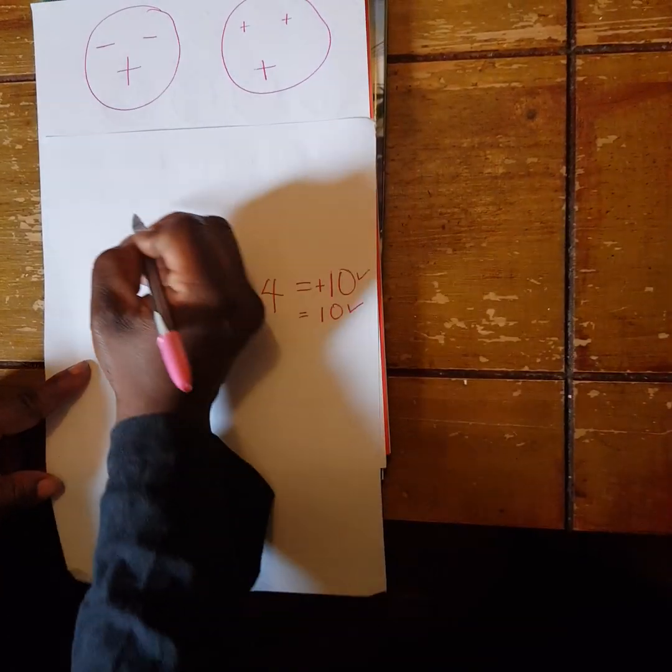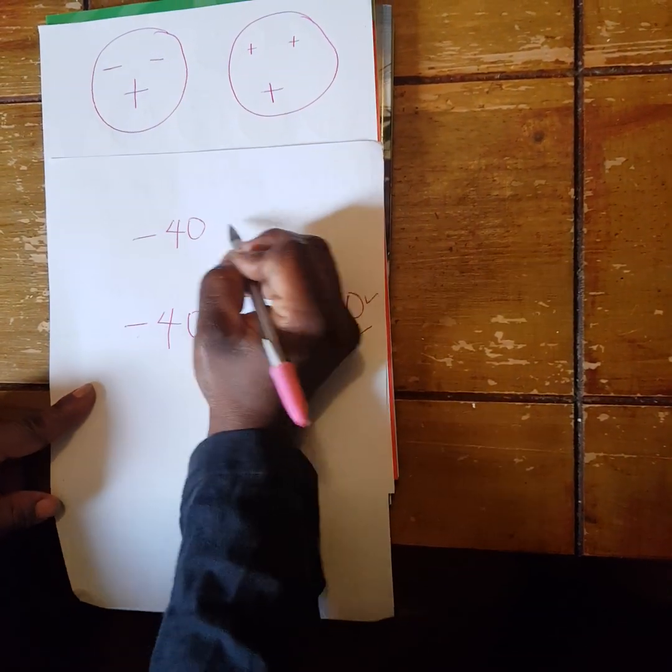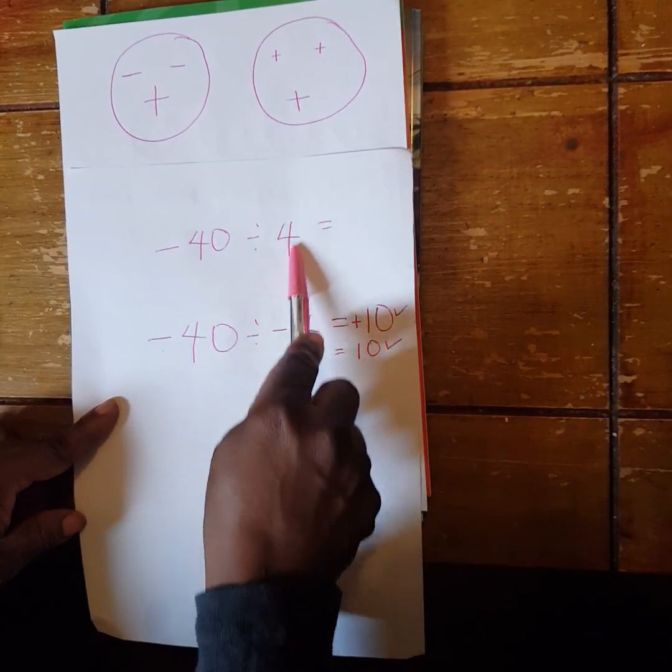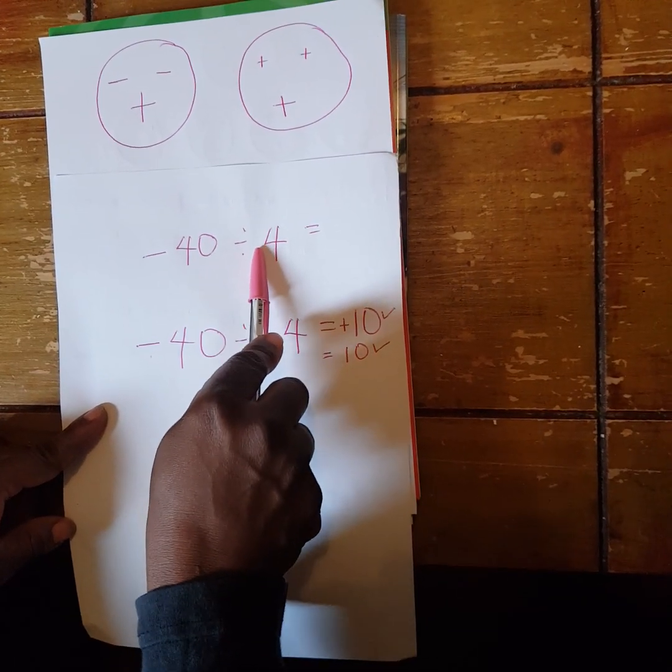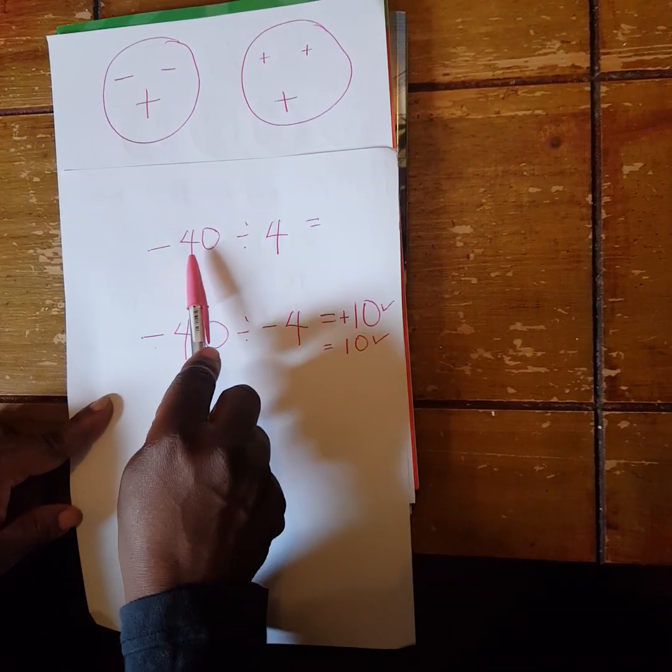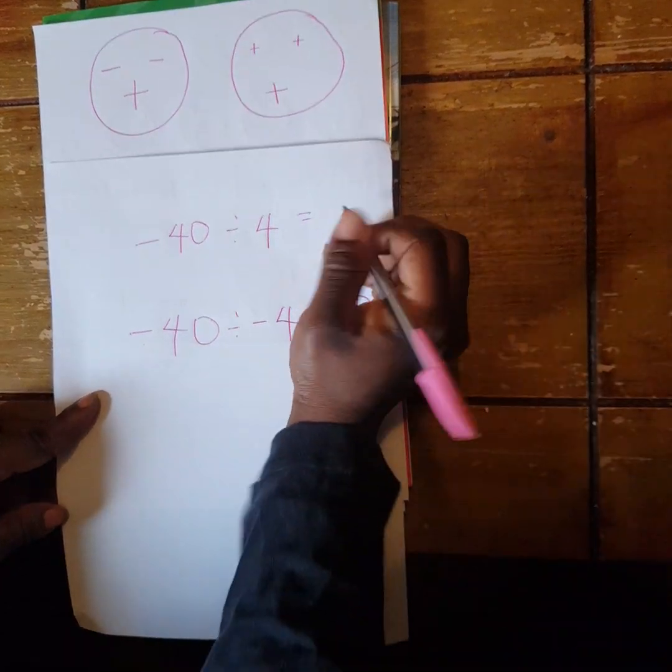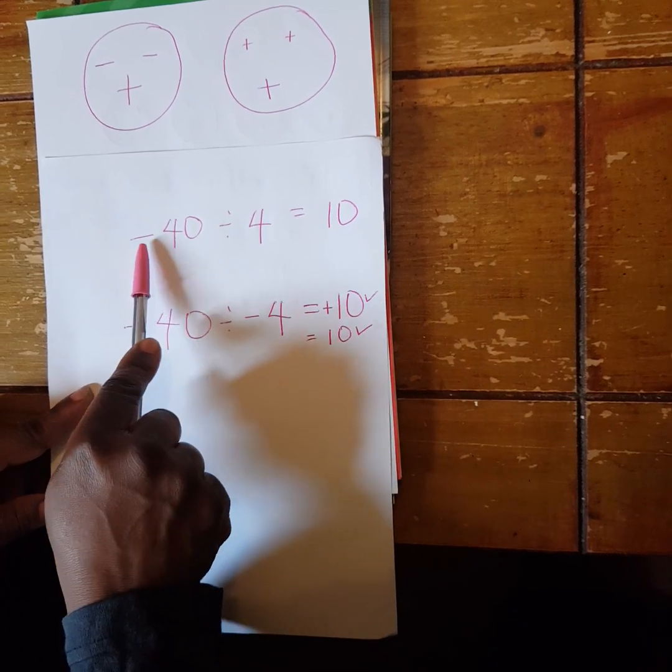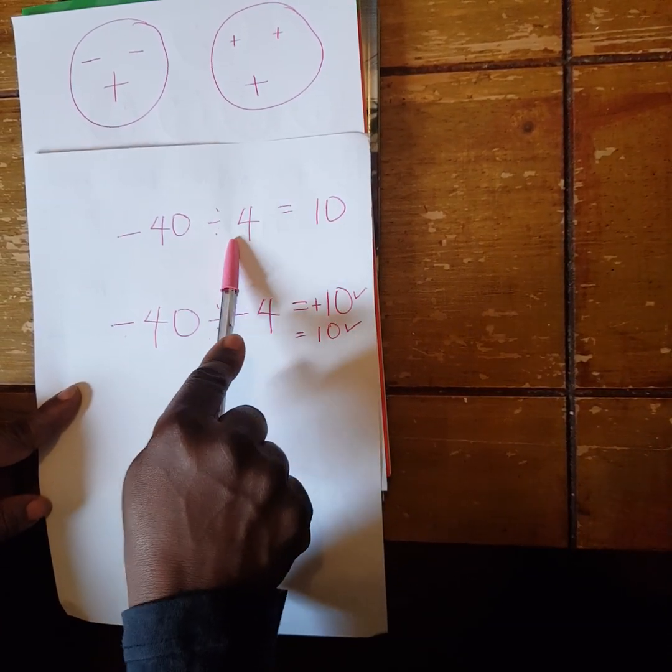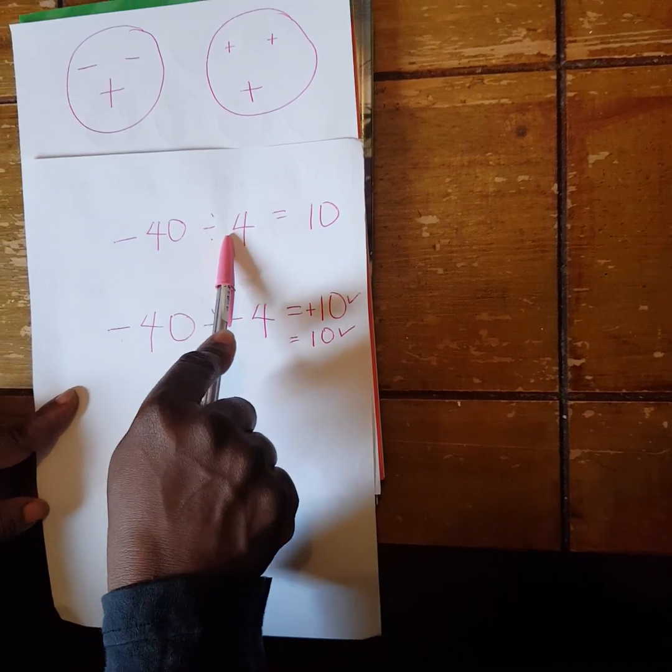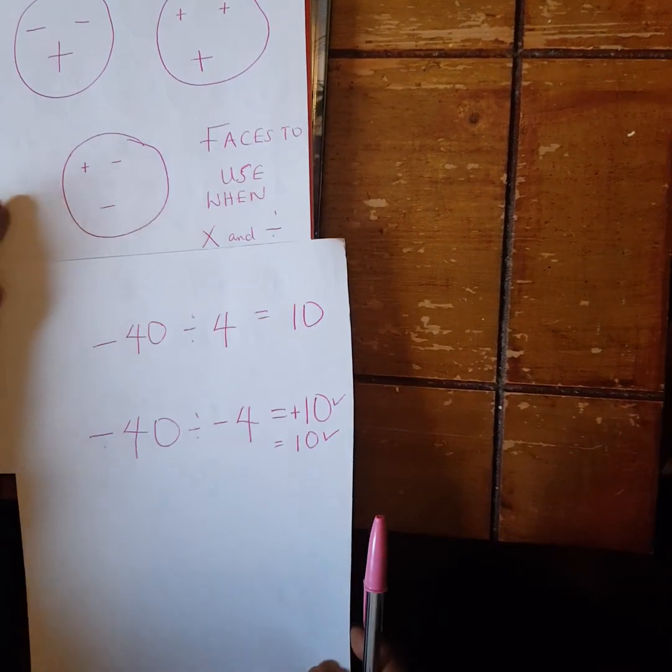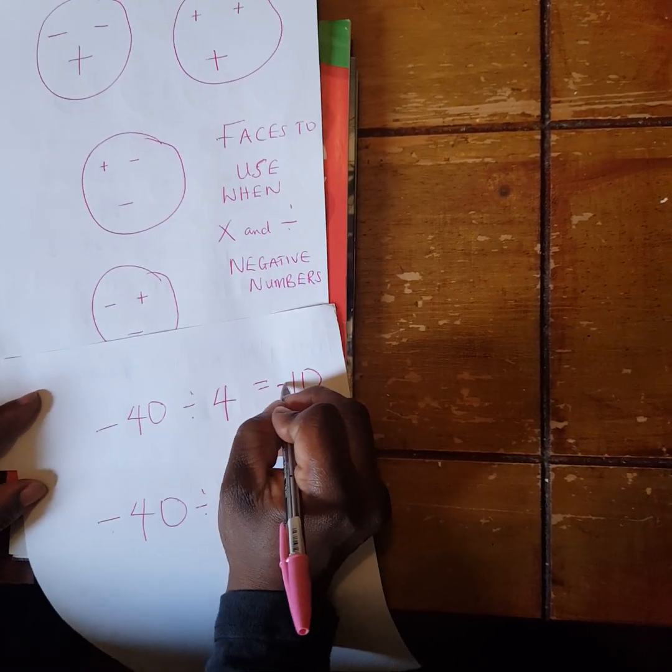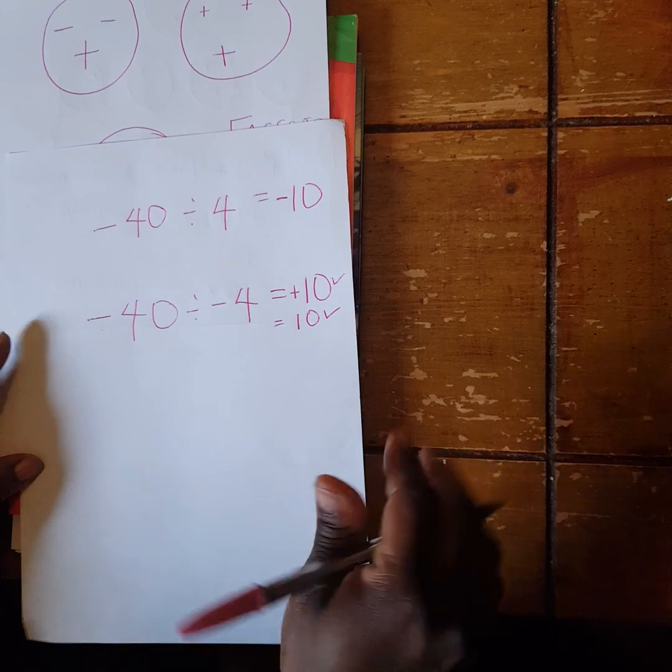If I do -40 divided by 4, now when you have no sign in front of a number, it is a positive number. So I do my normal 40 divided by 4, which is 10. Then I look at the signs. Now a negative and a positive, I told you already this is a positive when it doesn't have a sign. A negative and a positive will give us a negative. So that's going to be -10, and that is correct.